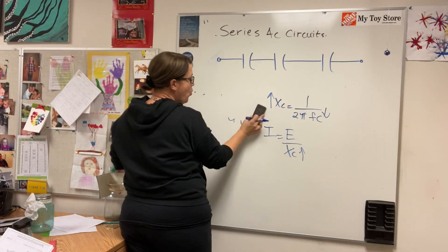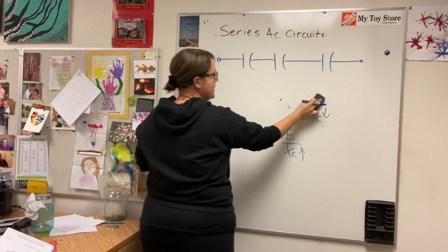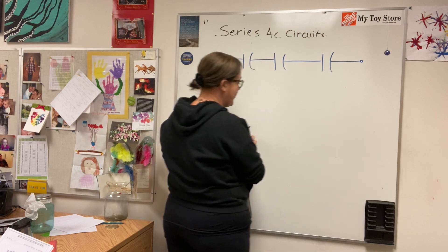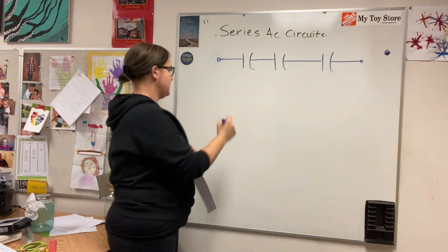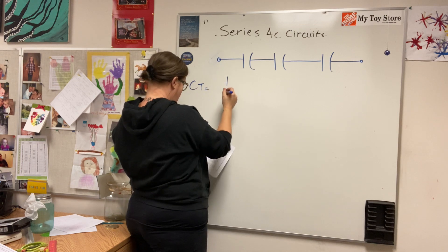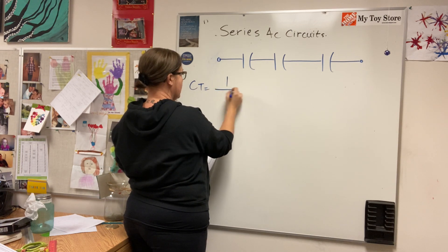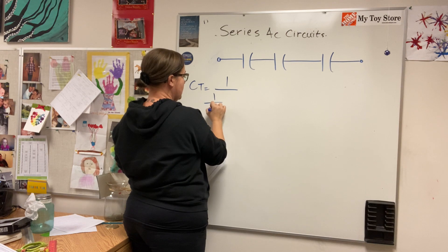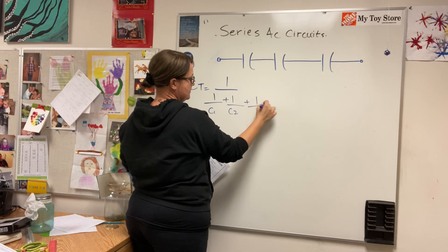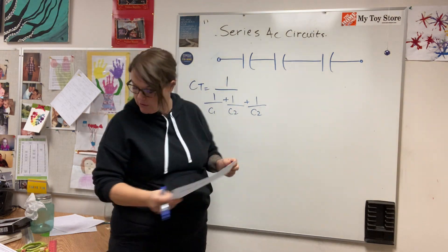That's why we take capacitors in series and add the capacitance inversely. C total equals 1 over (1/C1 plus 1/C2 plus 1/C3) and so on for as many capacitors as you add.